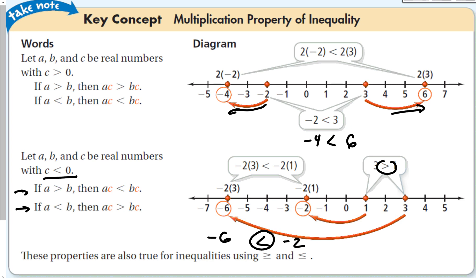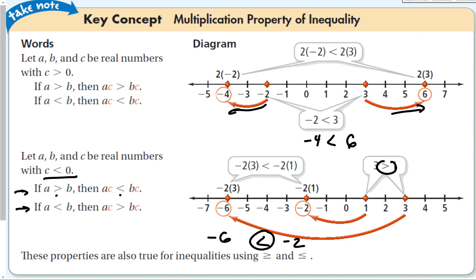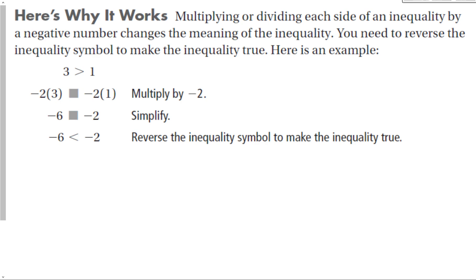If a is greater than b, then a times c is less than b times c — the inequality sign changes direction. This only happens when you are multiplying by a negative number, or dividing. Looking at this example, we have 3 is greater than negative 1. When we multiply both sides by negative 2, after simplifying, we see that negative 6 is less than negative 2. We have to reverse the inequality symbol to make the statement true: started with greater than, ended with less than when multiplying by a negative number.